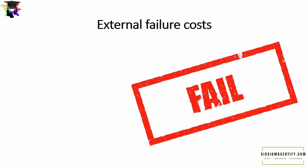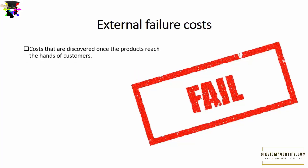The second type of cost of bad quality is external failure cost. External failure costs are those costs discovered once the products reach the hands of the customers. It is important to remember that external failure costs are very heavy costs, meaning we cannot simply expect or be prepared to absorb them.